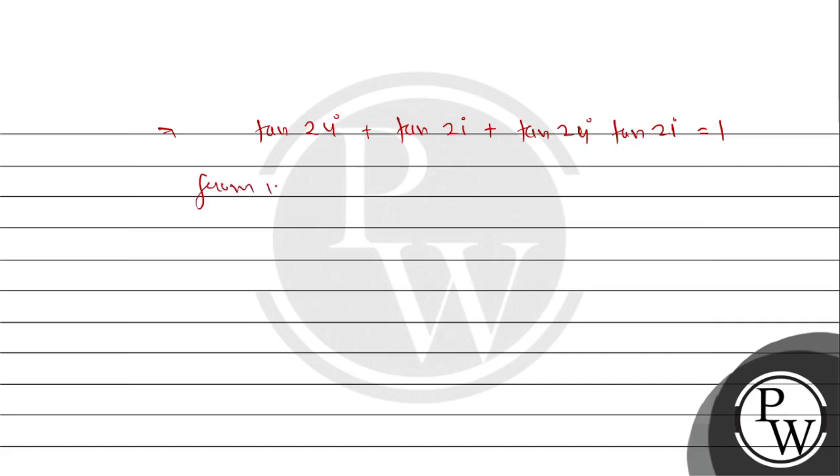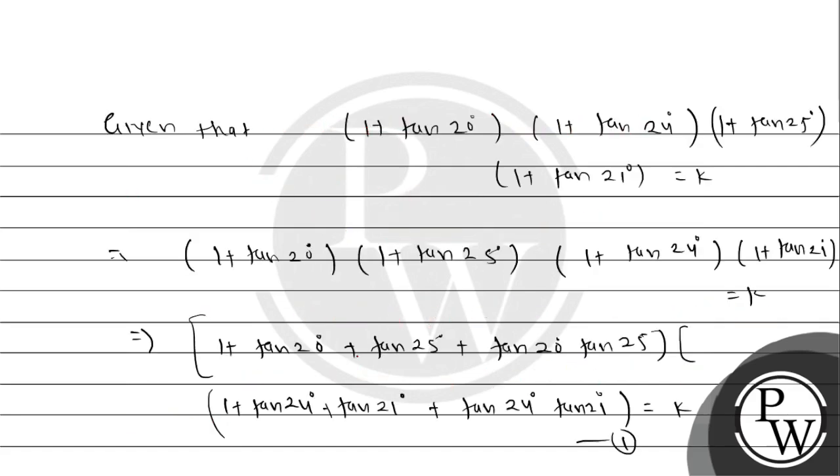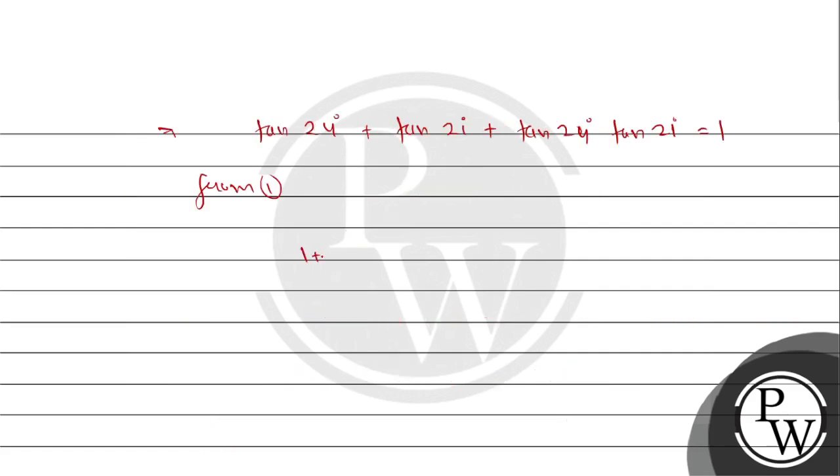So from equation number 1, this value is 1 and this value is 1. So 1 times 1 plus 1 times 1 is equal to 2.